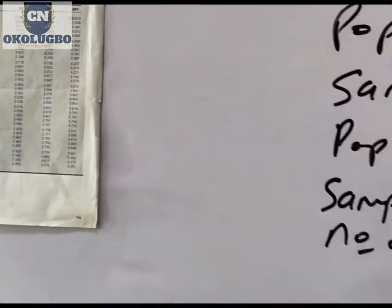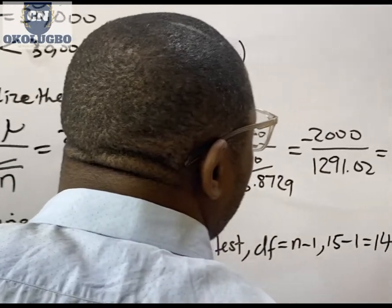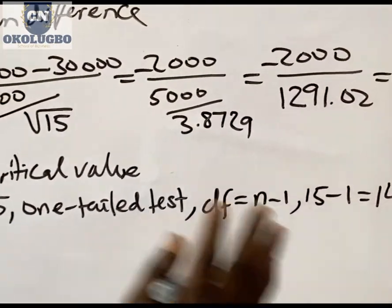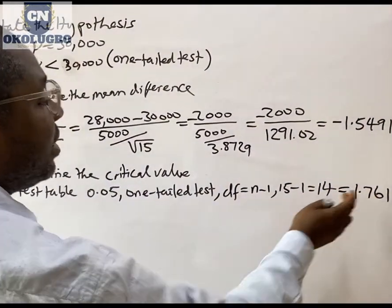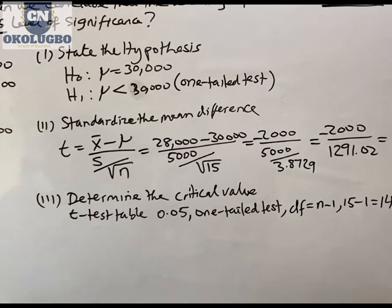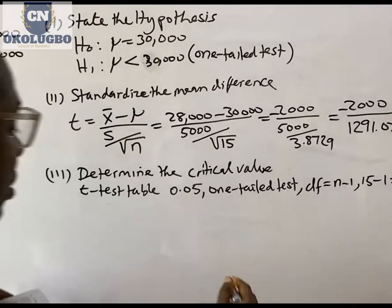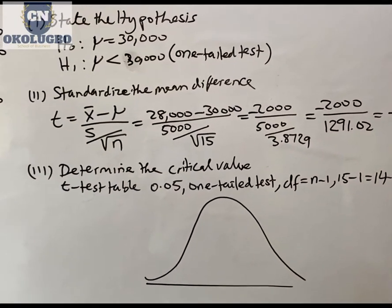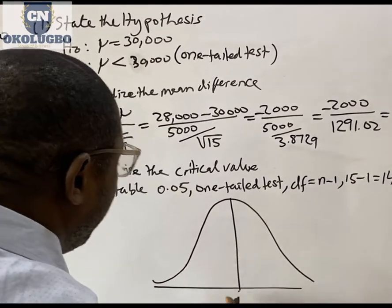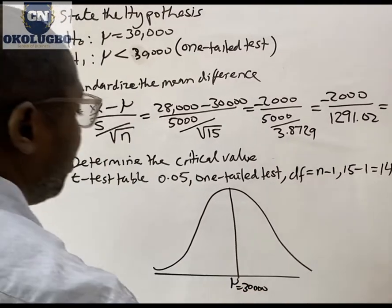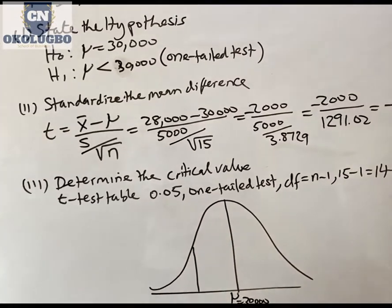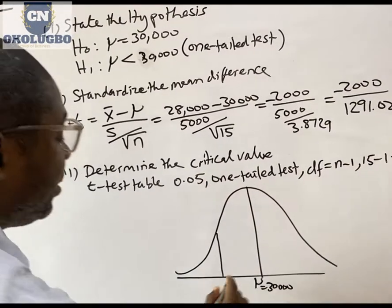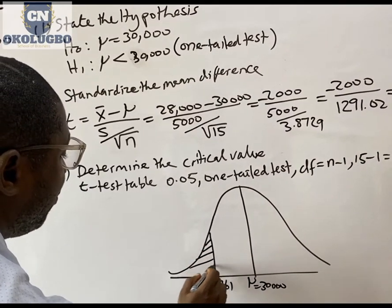Let's go back to our work board. The critical value is 1.761. We are going to draw our distribution curve. Since we are doing less than, it is going to be a left-tail test. The critical value from 0.05 is minus 1.761, which is our point of rejection.